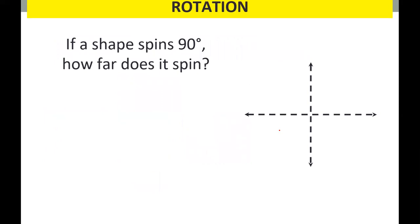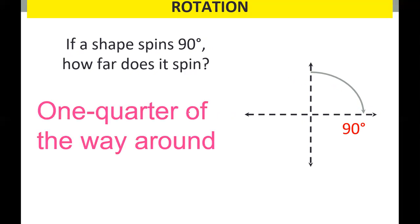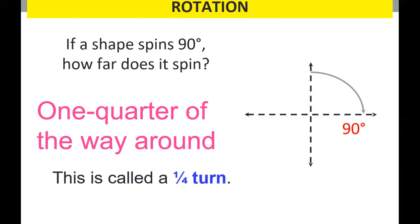If a shape spins 90 degrees, how far does it spin? It spins or turns only up to here — one quarter of the way around. That is called a quarter turn or 90 degrees. So you can write: 90 degrees clockwise.